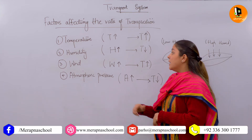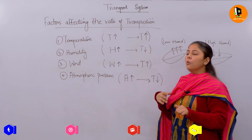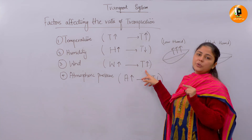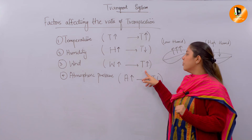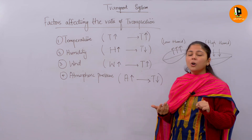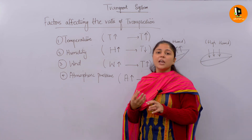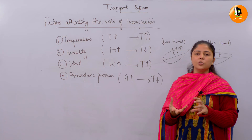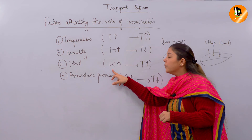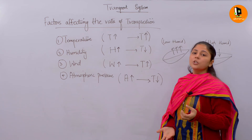The third important factor is wind, and it is directly proportional to transpiration rate. When there is more wind, more transpiration rate will occur, because wind allows more evaporation and more loss of water from the leaf structure. Wind always favors the evaporation process and produces a cooling effect on the leaf. So when wind concentration in the surrounding is more, it allows a more and more rate of transpiration.